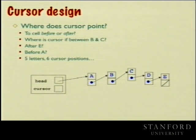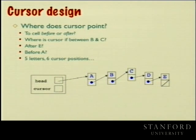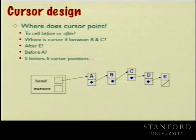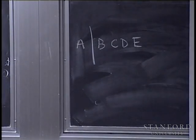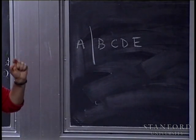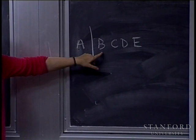Let's think about the cursor, because there's an important decision to make early that will facilitate the later work. With contents A, B, C, D, E, the cursor is actually between two characters. If the cursor is situated after A and before B, the two obvious choices for where the cursor pointer points are to A or to B. In the vector case with indices, there wasn't a strong preference for one over the other — but for the linked list there is going to be a really good reason to pick one over the other.